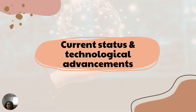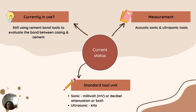Next is the current status and technological advancements of the tools. Cement bond tools are still used for evaluating the bond between casing and cement. Measurements are made using acoustic sonic or ultrasonic tools. Industry standard sonic tool measurements are typically displayed in millivolts, and for ultrasonic tools, it is normally expressed in kilohertz.